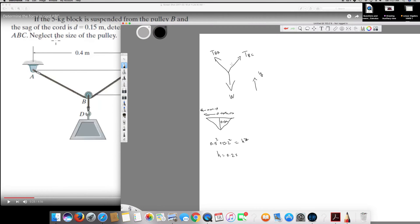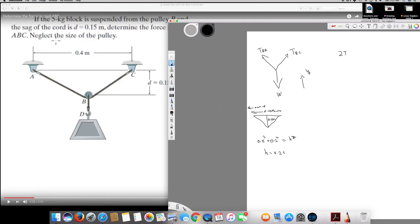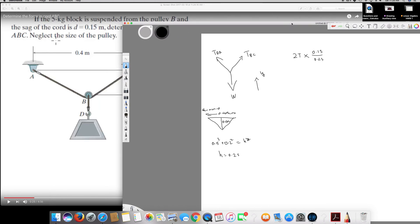I can form an equation. If I take all the vertical components, it's going to be 2T sine theta. Sine theta is opposite over hypotenuse - the opposite is the y-axis and adjacent is x-axis, so it's going to be 0.15 over 0.25. And this is 2T sine theta, minus the weight.